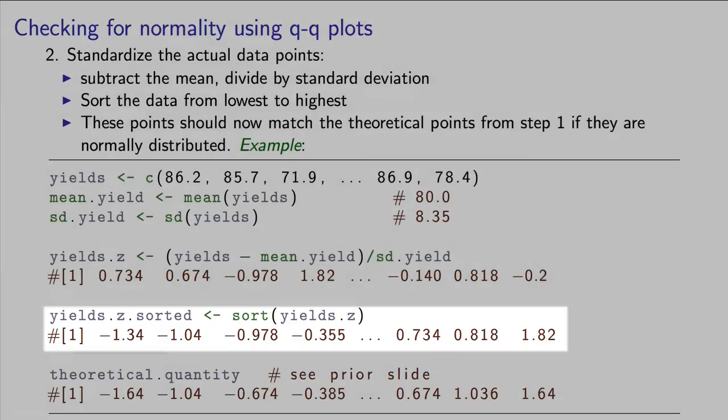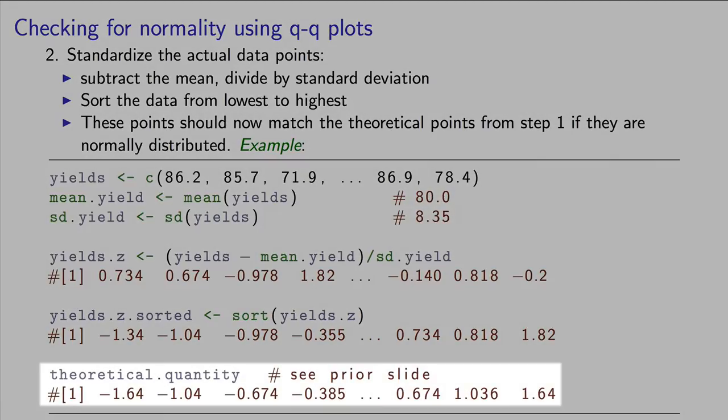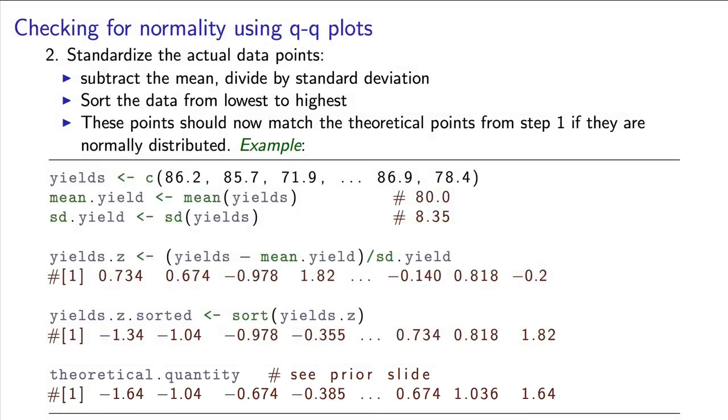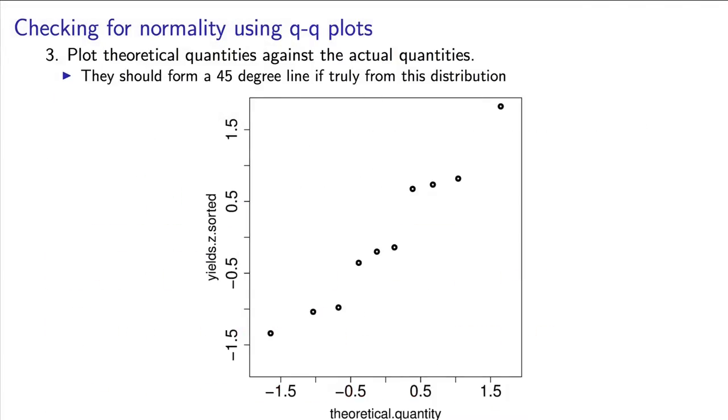Now we are ready to compare the z-values from our actual data with the z-values from the normal distribution. If our original data were really normally distributed, we should get calculated z-values that are roughly the same as the z-values from the normal distribution. We expect some noise and error, of course, so let's go compare them graphically.